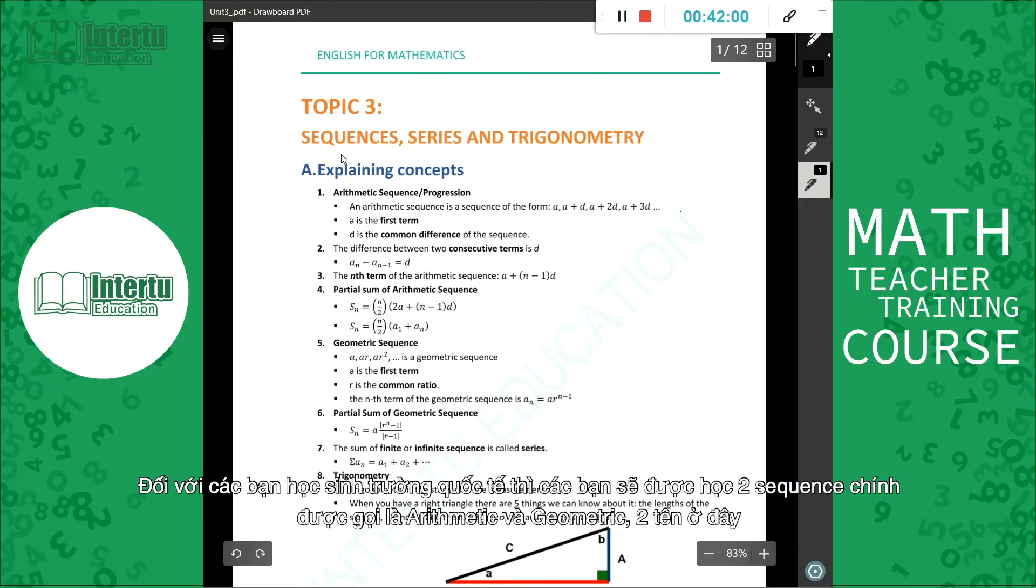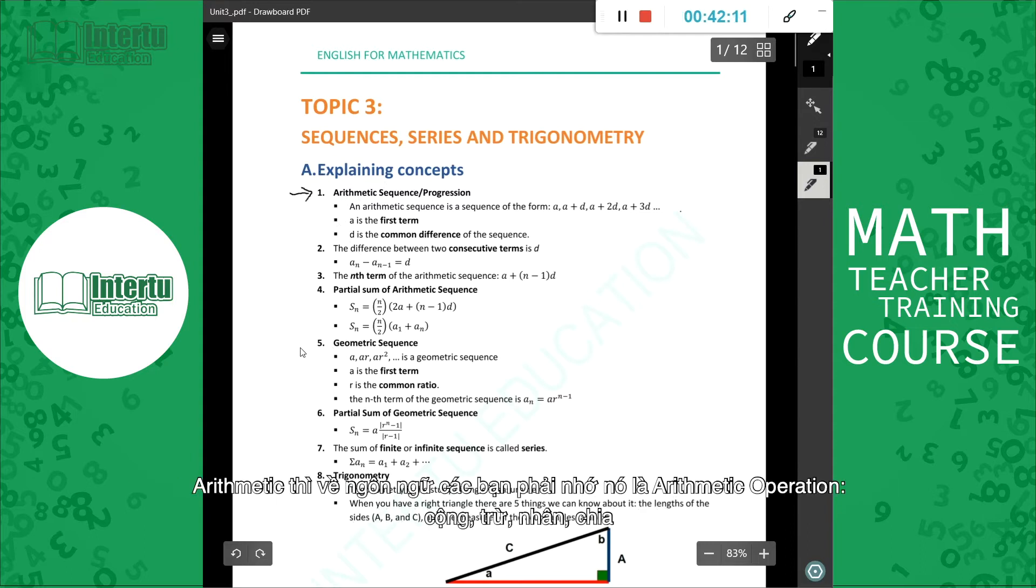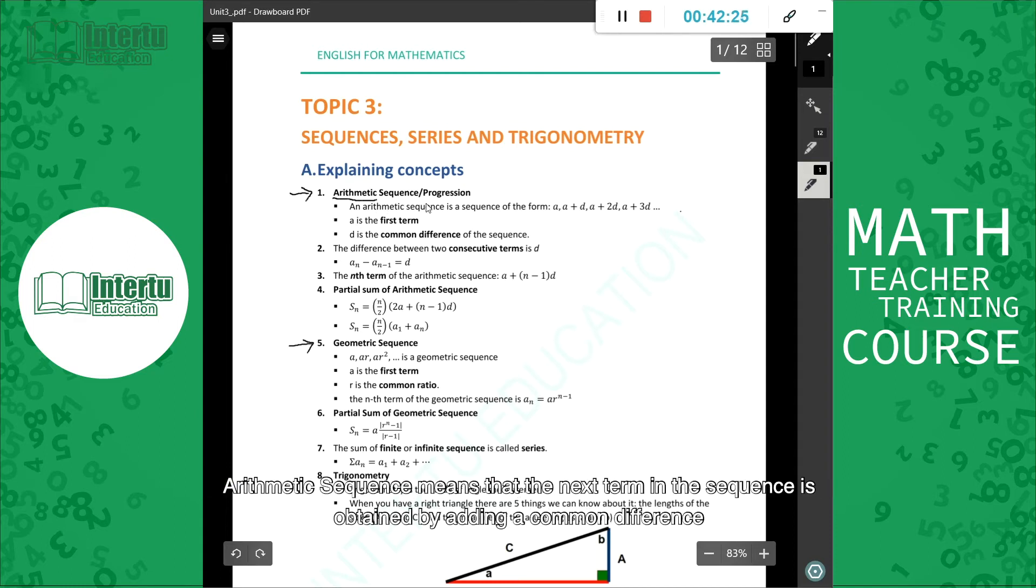[Vietnamese: For sequences, for international school students, you will learn two main sequences called arithmetic and geometric. These are the two names here.] Arithmetic - in terms of language, you'll see it and remember it as arithmetic operations like plus, minus, multiplication and division. So arithmetic sequence means that the next term in the sequence is obtained by adding a common difference.